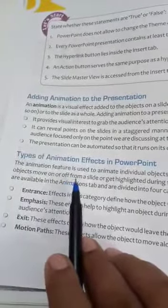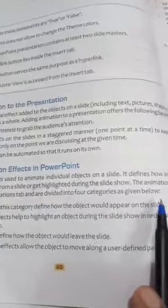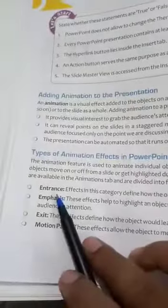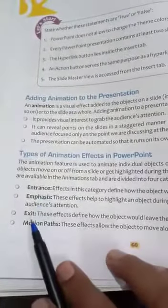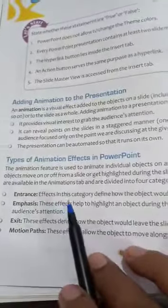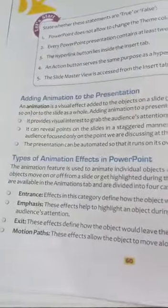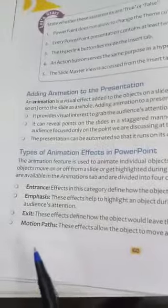The animation feature is used to animate individual objects on a slide. It defines how individual objects move on or off from a slide, or get highlighted during the slideshow. The animation effects are available in the Animations tab and are divided into four categories: Entrance, Emphasis, Exit, and Motion Path. Entrance effects define how the object appears on the slide. Emphasis effects highlight an object during the slideshow to draw audience attention. Exit effects define how the objects leave the slide.